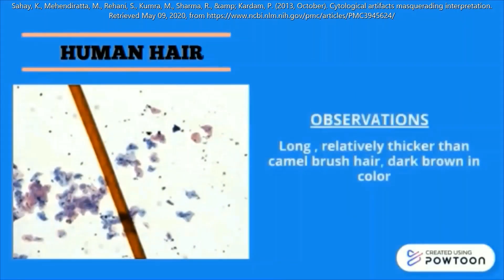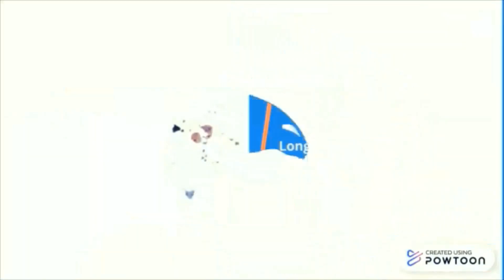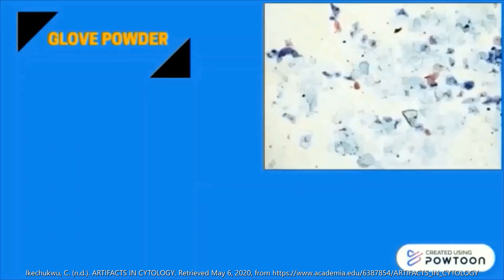Human hair is long, relatively thicker than camel brush hair, and dark brown in color. The next artifact is glove powder.